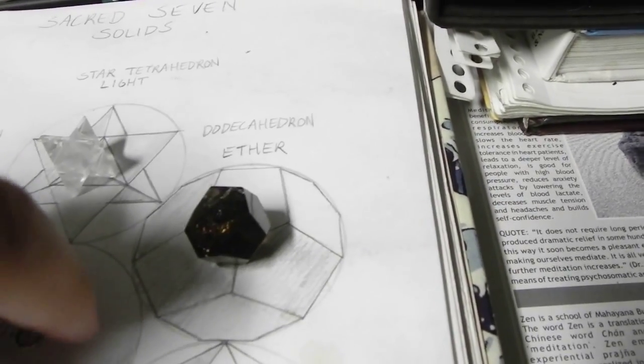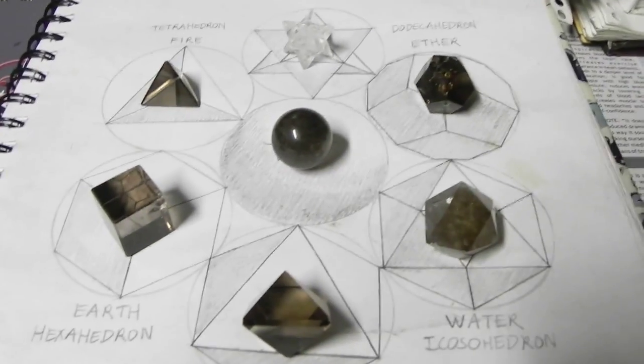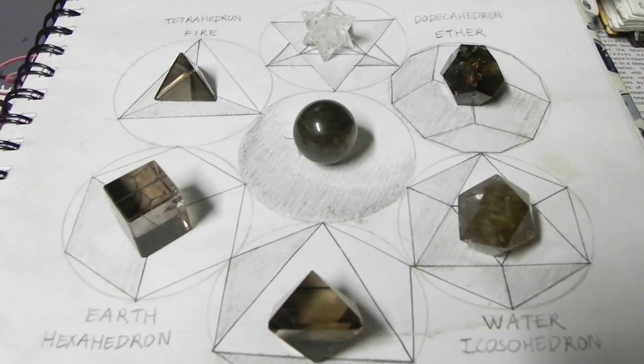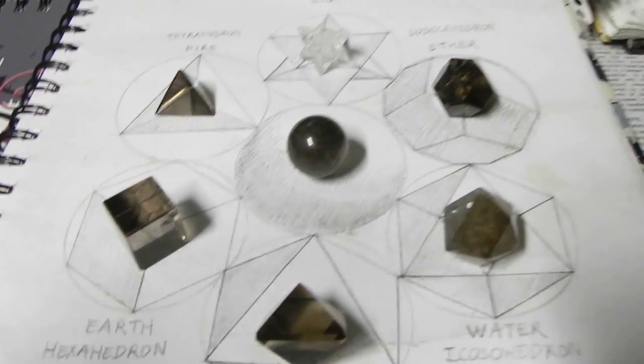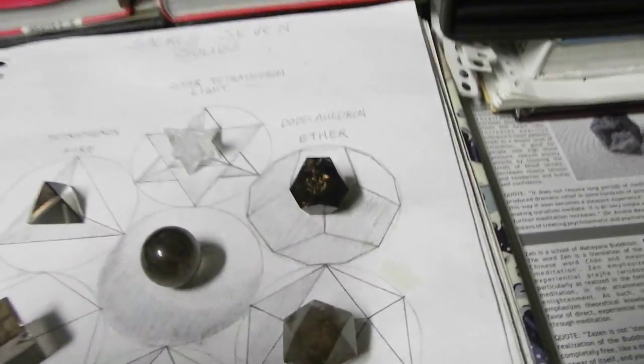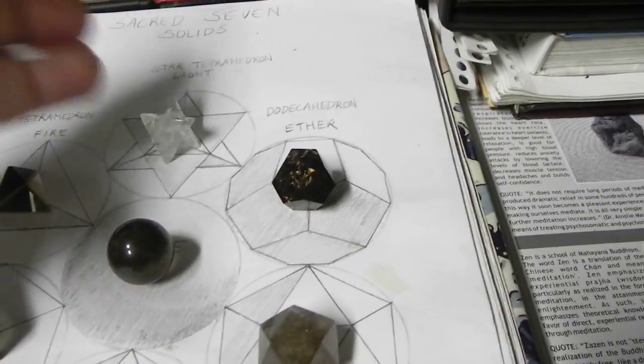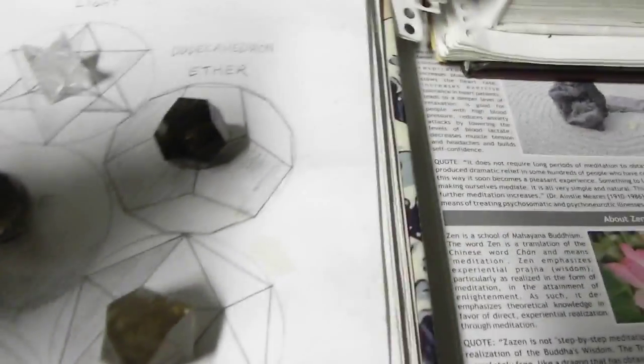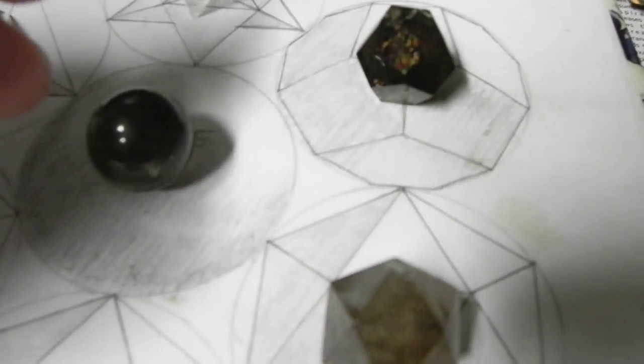And the last of the little guys is the void, which is the sphere. With all seven of them, you get a basic arrangement of the entire universe. Everything in the universe can be divided in any of these seven solids. Light, for instance, would be the star tetrahedron, fire, earth, air, water, ether, and the void.